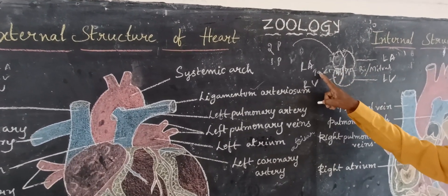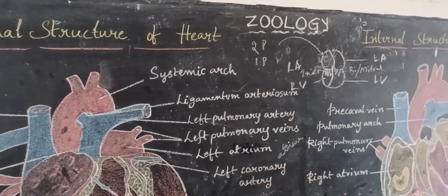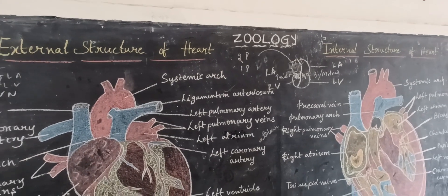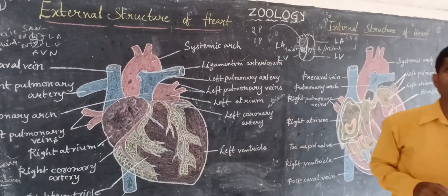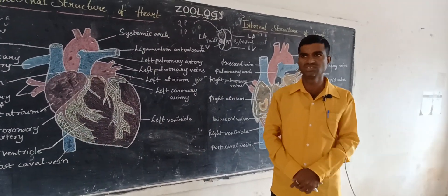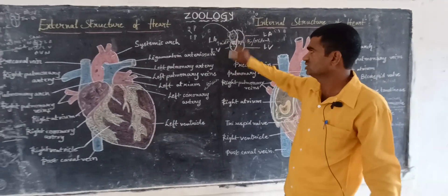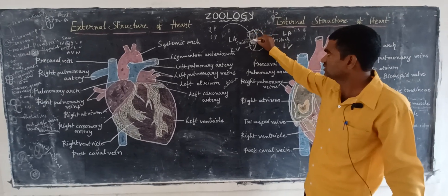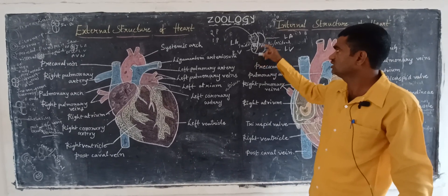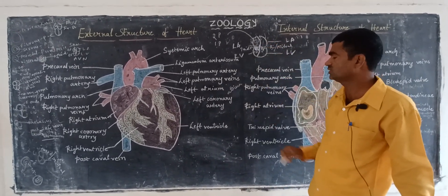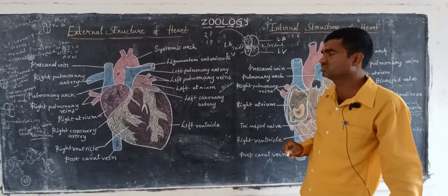The ventricles are blood-pumping chambers. The ventricles are somewhat thicker compared to the atria. Blood is pumped from the right atrium through the tricuspid valve into the right ventricle, and from the left atrium, blood is pumped through the mitral valve into the left ventricle.